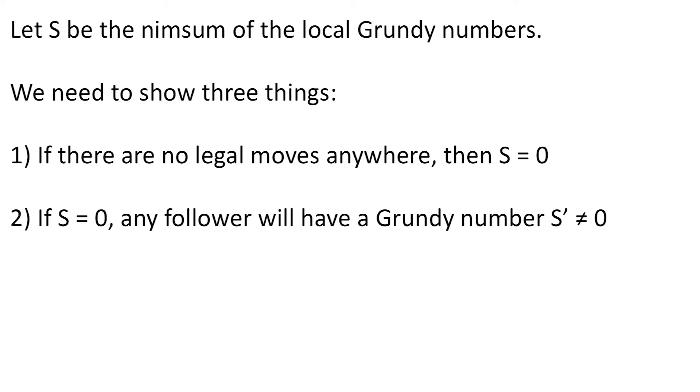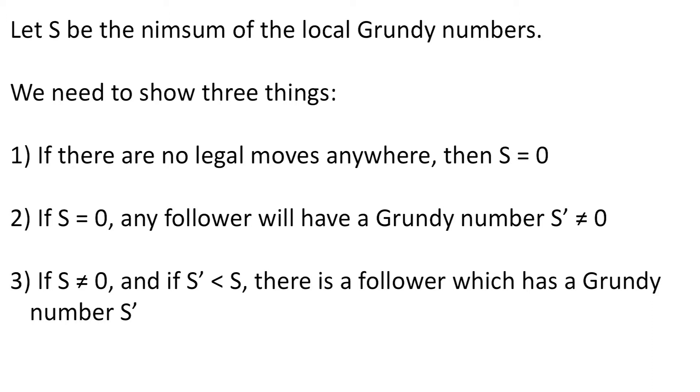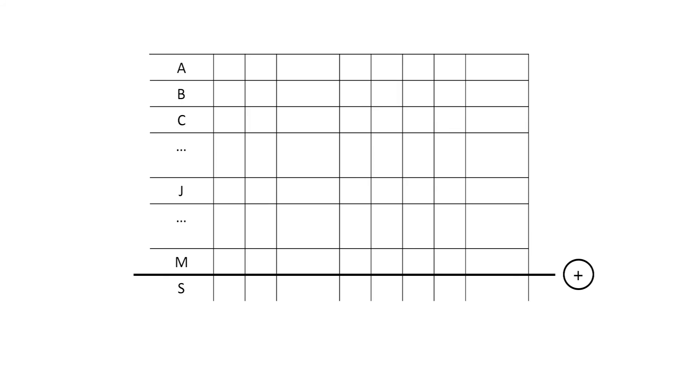Third, we come to the hard part. We must show that if S is nonzero and if S prime is any non-negative integer less than S, then there is a follower whose Grundy number is S prime. Let's denote the Grundy numbers of the component games by the letters A, B, C, up to M. Let the letter S denote their nim sum. We need to find a move which will change that S to any specified smaller S prime. As usual, we'll denote the change by delta.